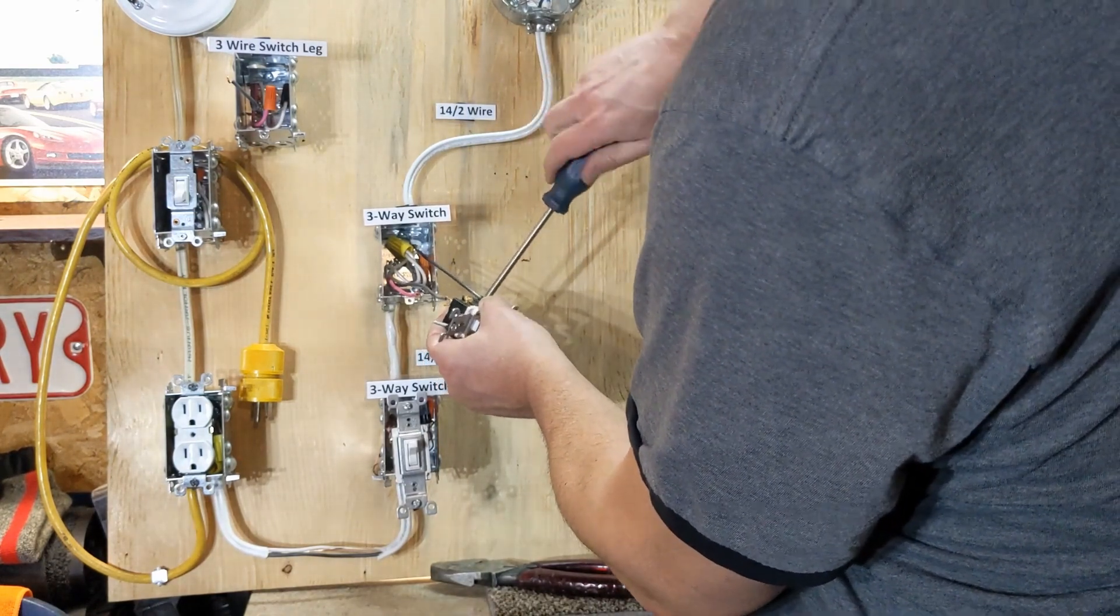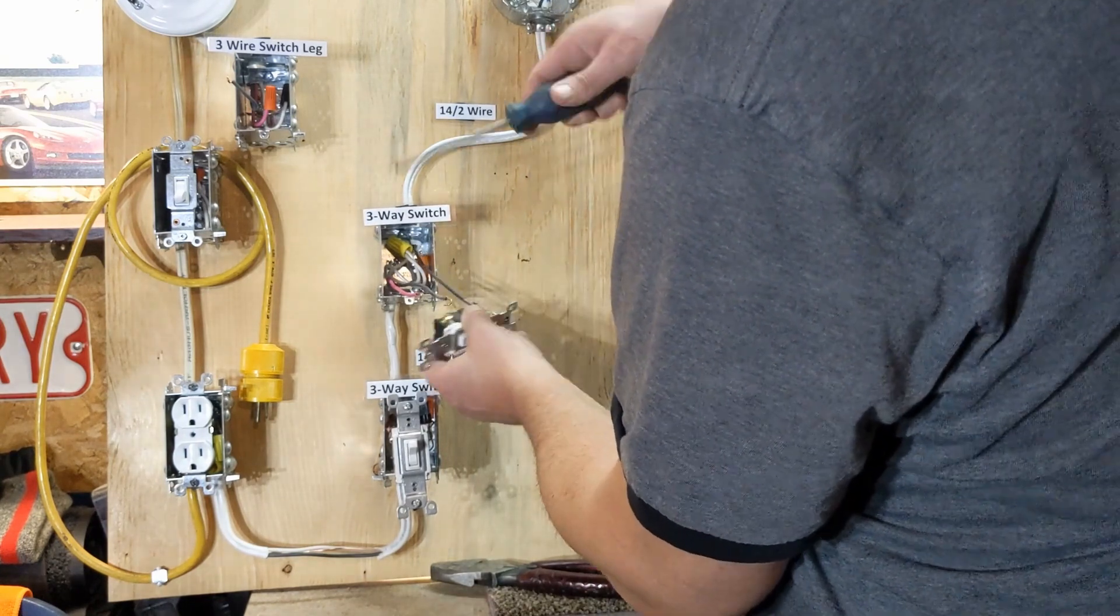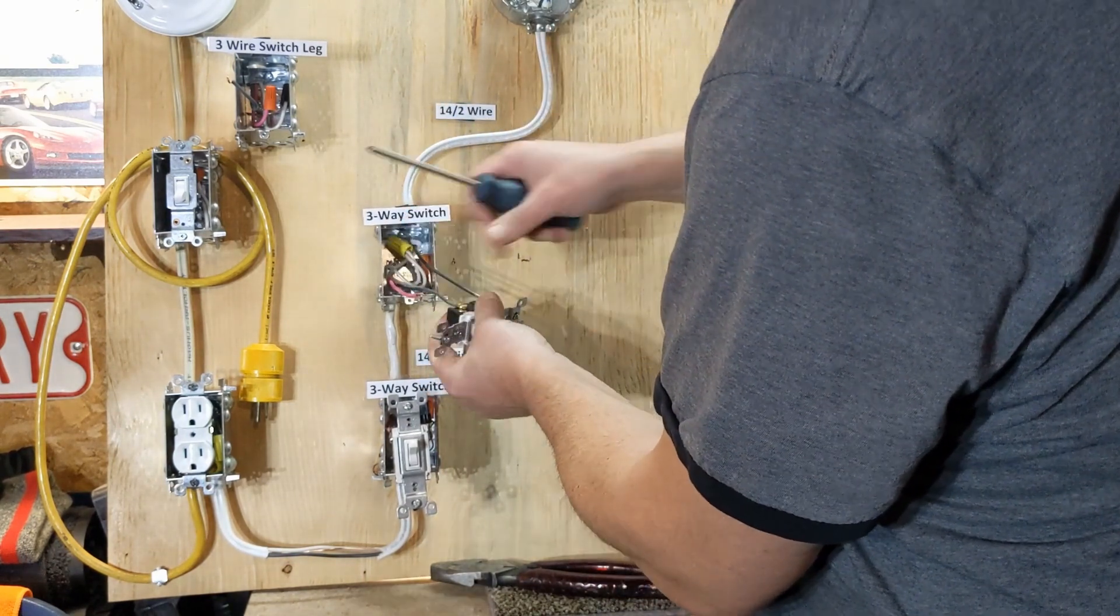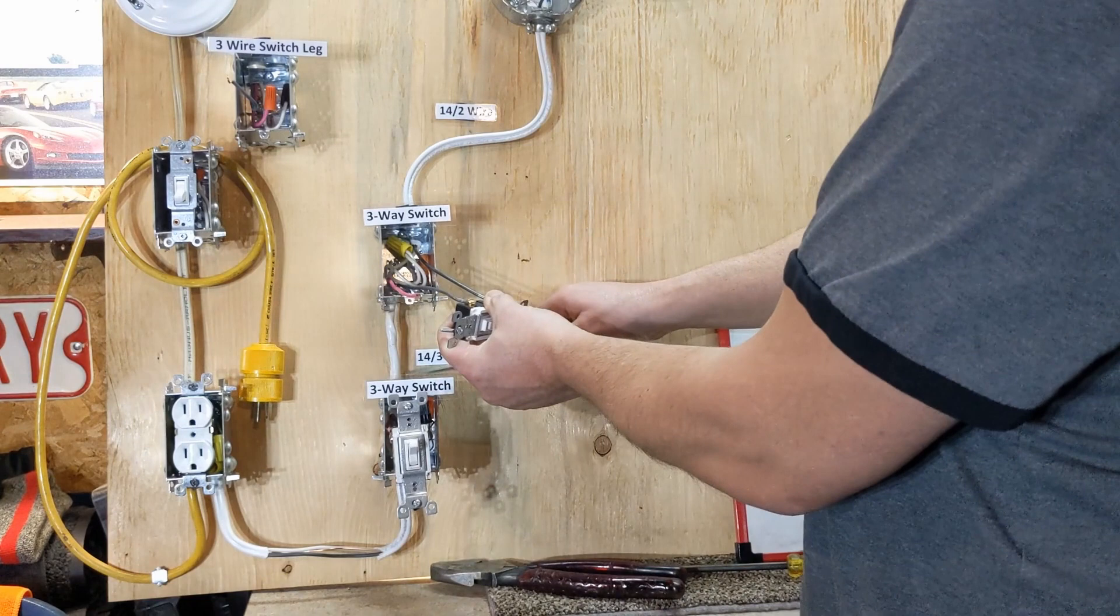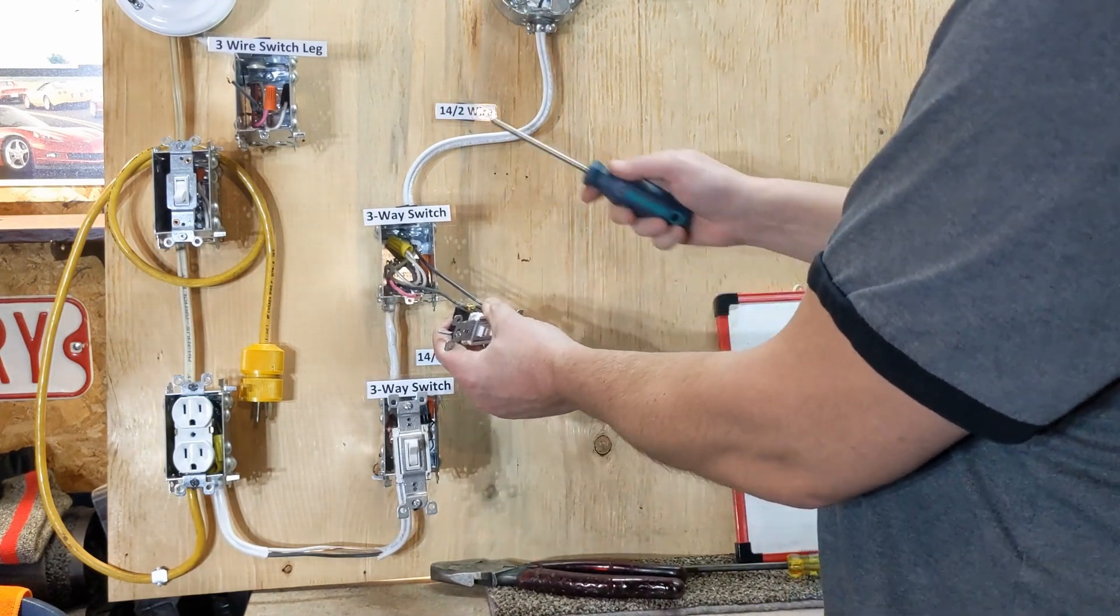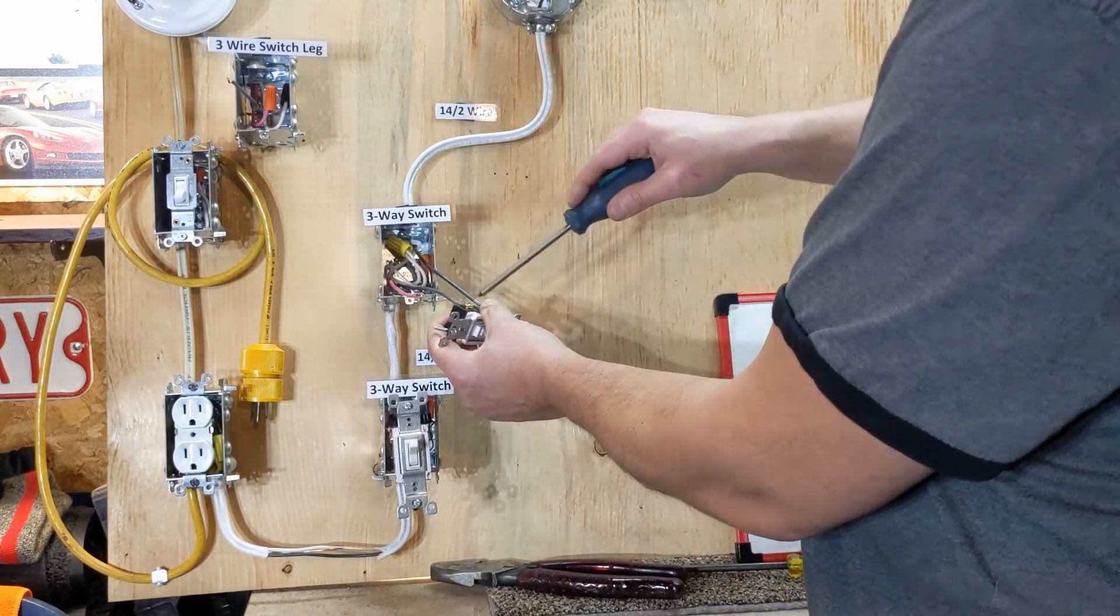So it's 14 gauge wire. We're using three conductor in between, two conductors coming in, two conductor is going up to our light.